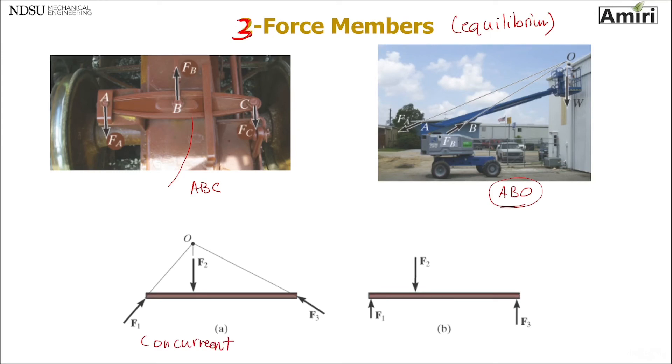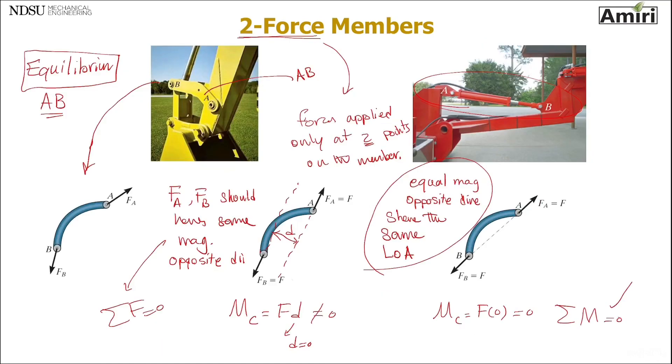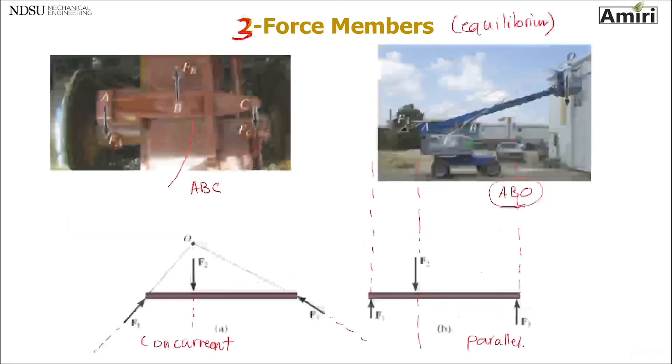Meaning they all pass through the same point. The line of action of the forces, they all meet at point O and they are concurrent. Or if they meet at infinity, meaning they are parallel, these are the only way that the summation of forces and equation of moment are subject to zero. So remember, for two-force members, they need to be equal, opposite direction, share the same line of action. For three-force members, they need to either be concurrent or parallel to be considered a three-force member. Thank you.